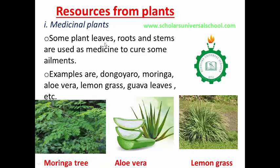Medicinal plants — the roots, leaves, and bark are used as medicine to cure some ailments. Examples are the dogoyaro, moringa tree, aloe vera, lemongrass, boba, and lujititi. They serve as herbs to cure diseases. The moringa tree is a good herb and is medicinal. The aloe vera and lemongrass are also herbs. They are all medicinal plants and resources from plants.